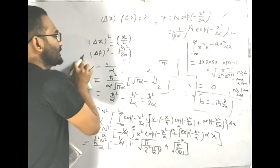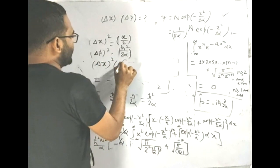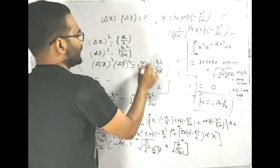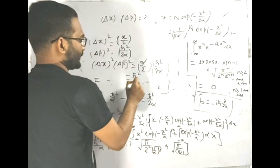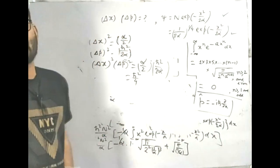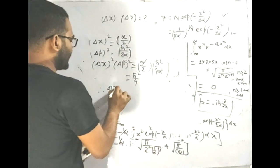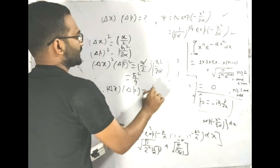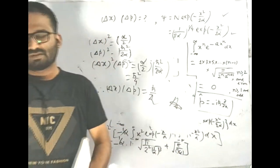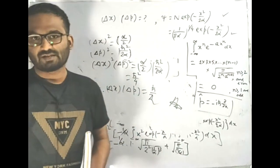Therefore delta x squared times delta p squared equals alpha by 2 times h-bar squared by 2 alpha. The alpha terms cancel, giving h-bar squared by 4. Taking the square root, delta x times delta p equals h-bar by 2, which is the final answer — exactly the minimum uncertainty product, consistent with the Heisenberg uncertainty principle. If you have any questions, please ask in the comment section. Thanks for watching.